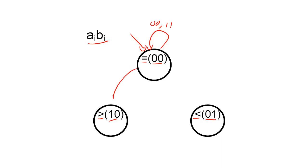If we get the input 10, we are now going to be able to store the information that A is greater than B. And if we get the input sequence 01, we're going to move to a state that records that A is less than B.